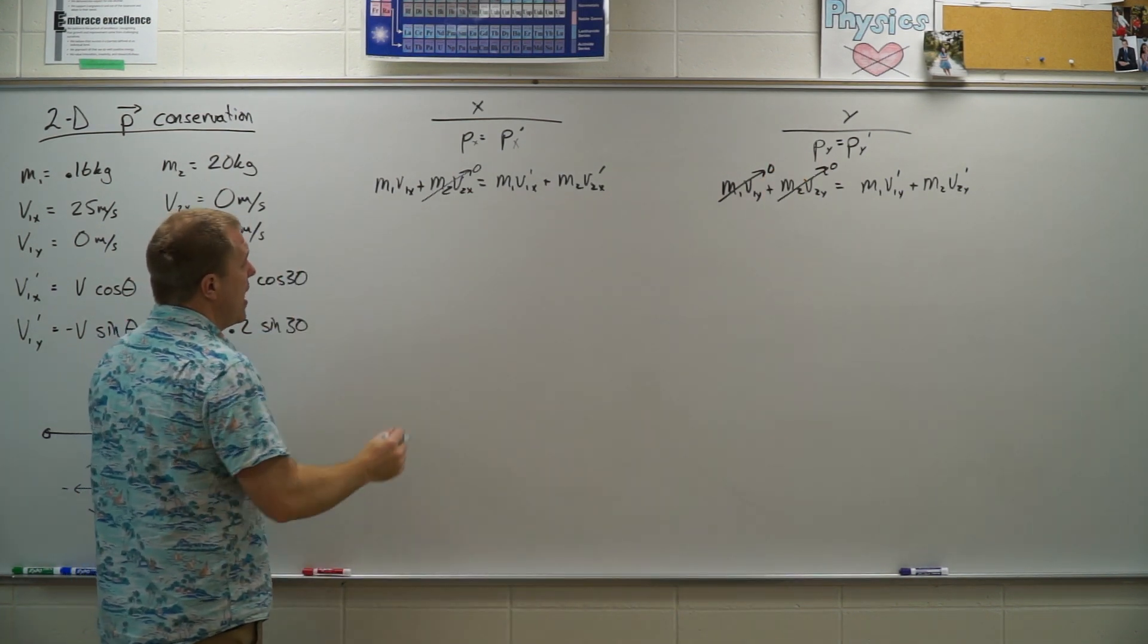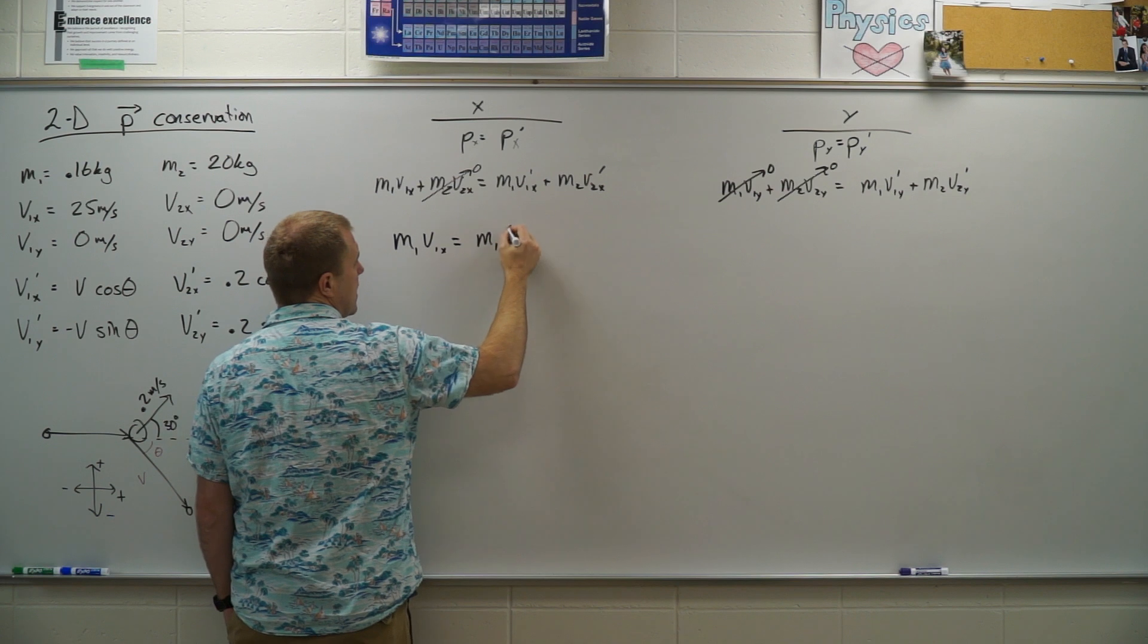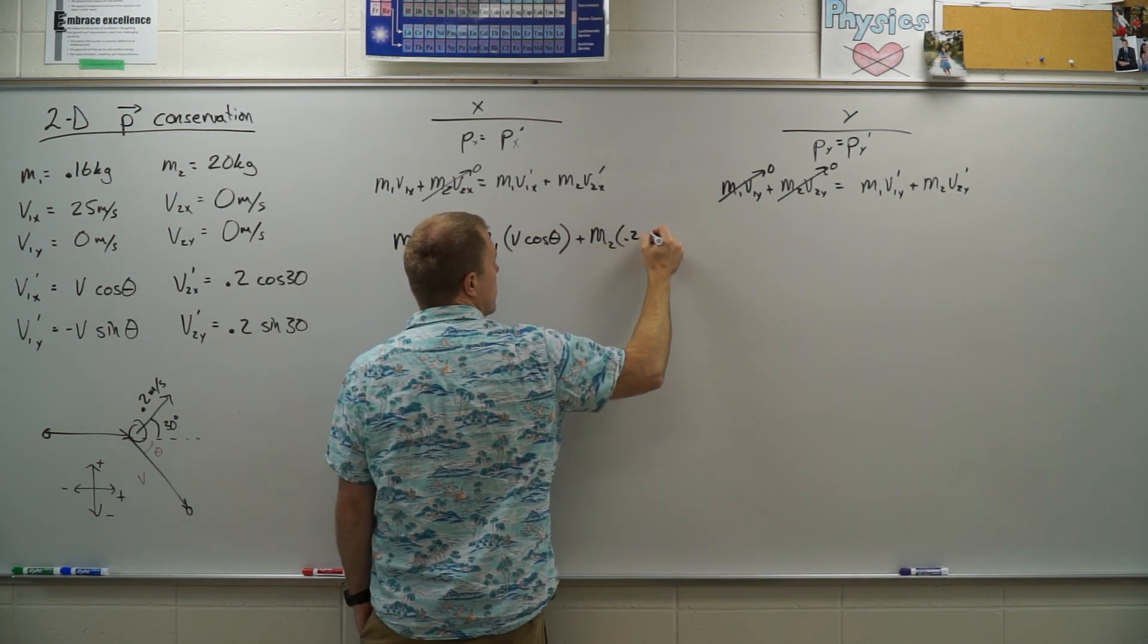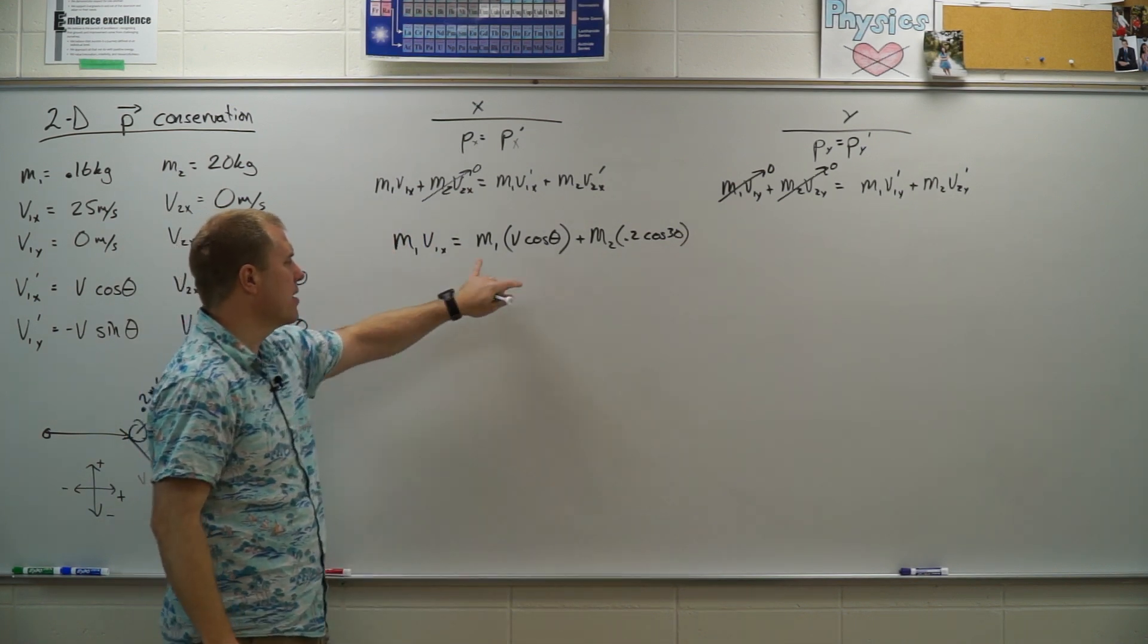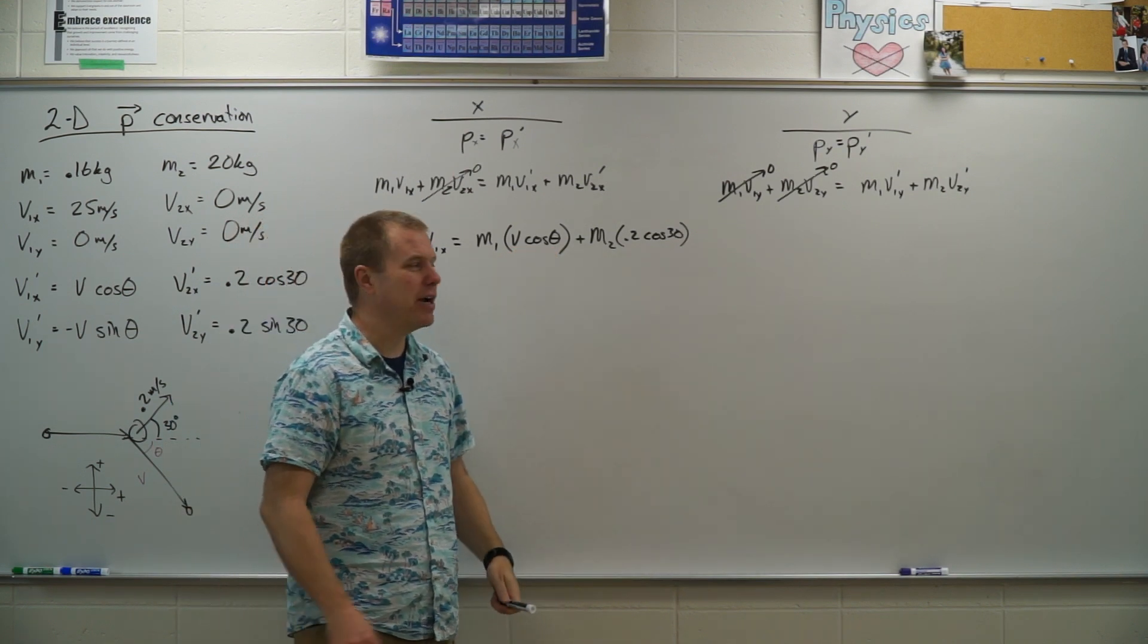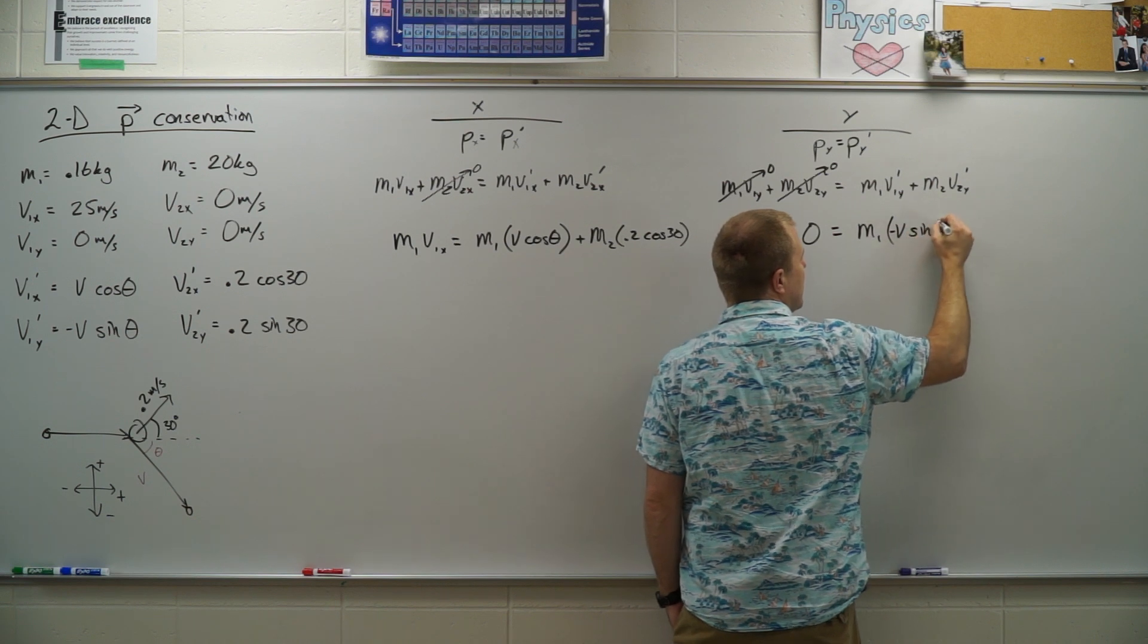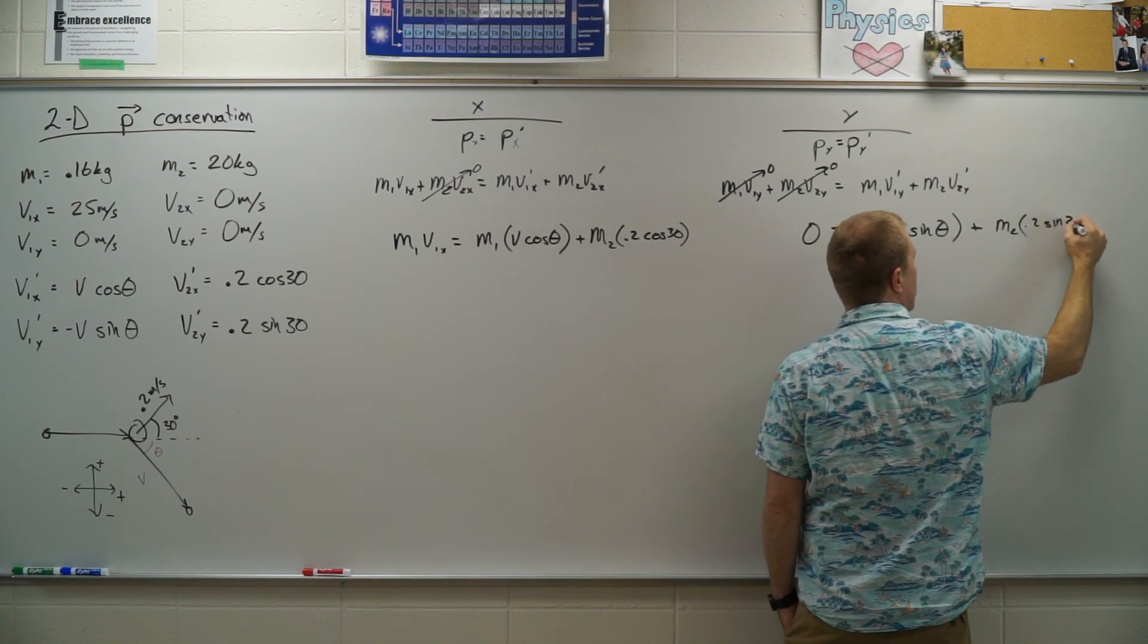So now I have the mass of the puck times V1X equals the mass of the puck times V cosine theta plus the mass of the curling stone times 0.2 cosine 30. So the problem here is I know the mass of the puck, I know the initial velocity of the puck. I do not know V or theta. So I have two unknowns. So lucky for me, I have a second equation. So I have two equations. So here I have zero is equal to M1 times negative V sine theta plus M2 times 0.2 sine 30.